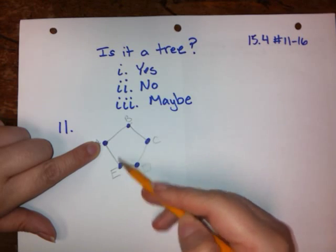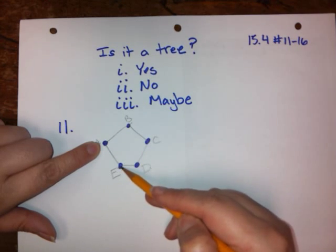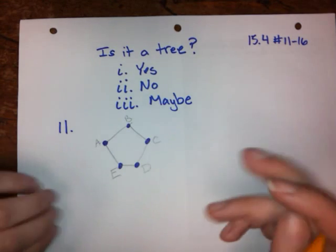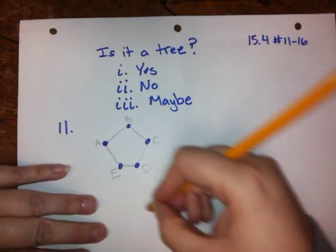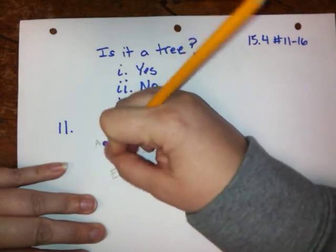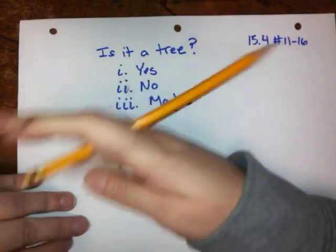If I start at vertex A, how many ways can I get to vertex E? Well, I can get to E this way, or I can get to E that way — so that can't be the right graph they're describing. What happens if I erase this edge between A and E?